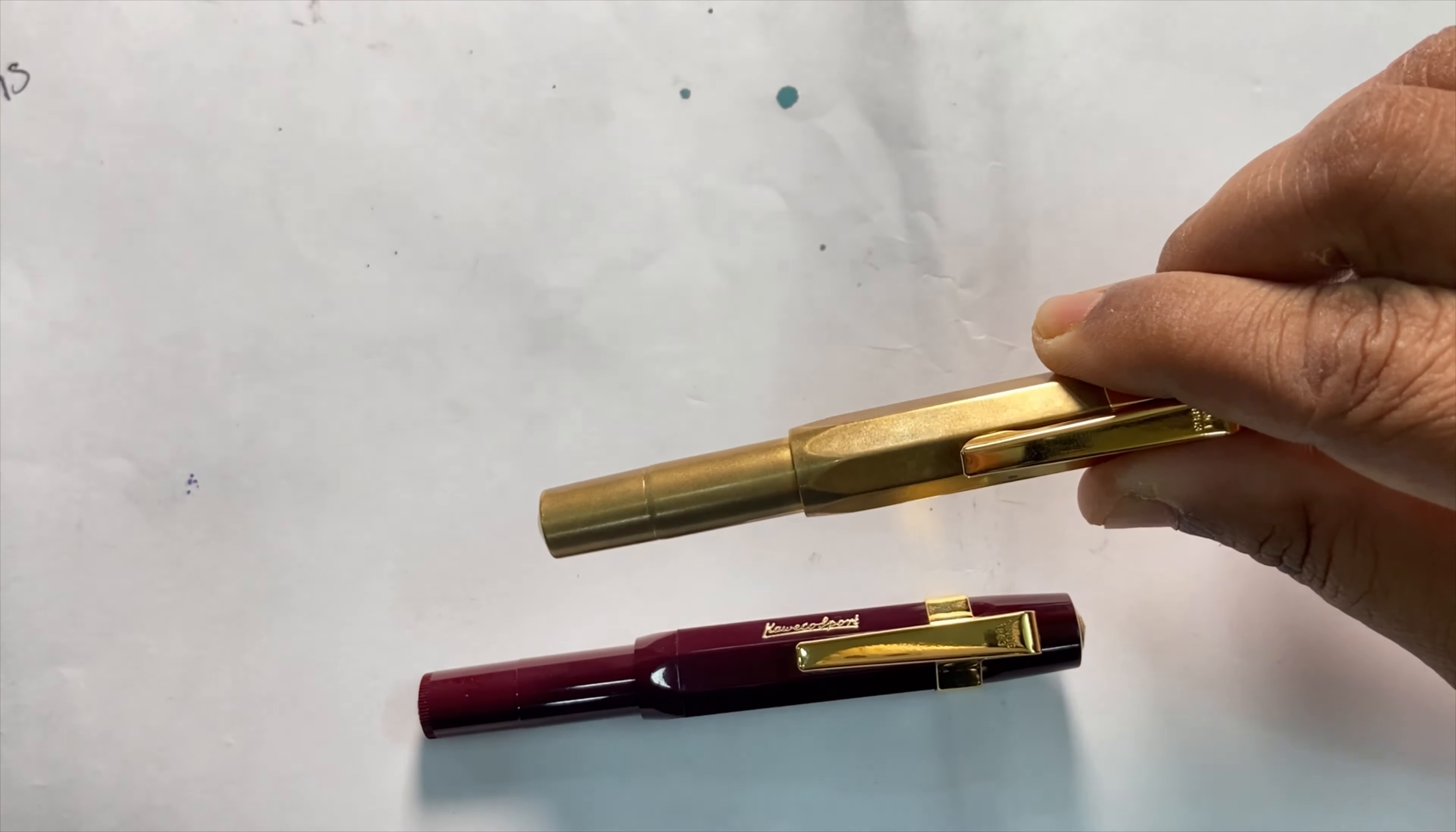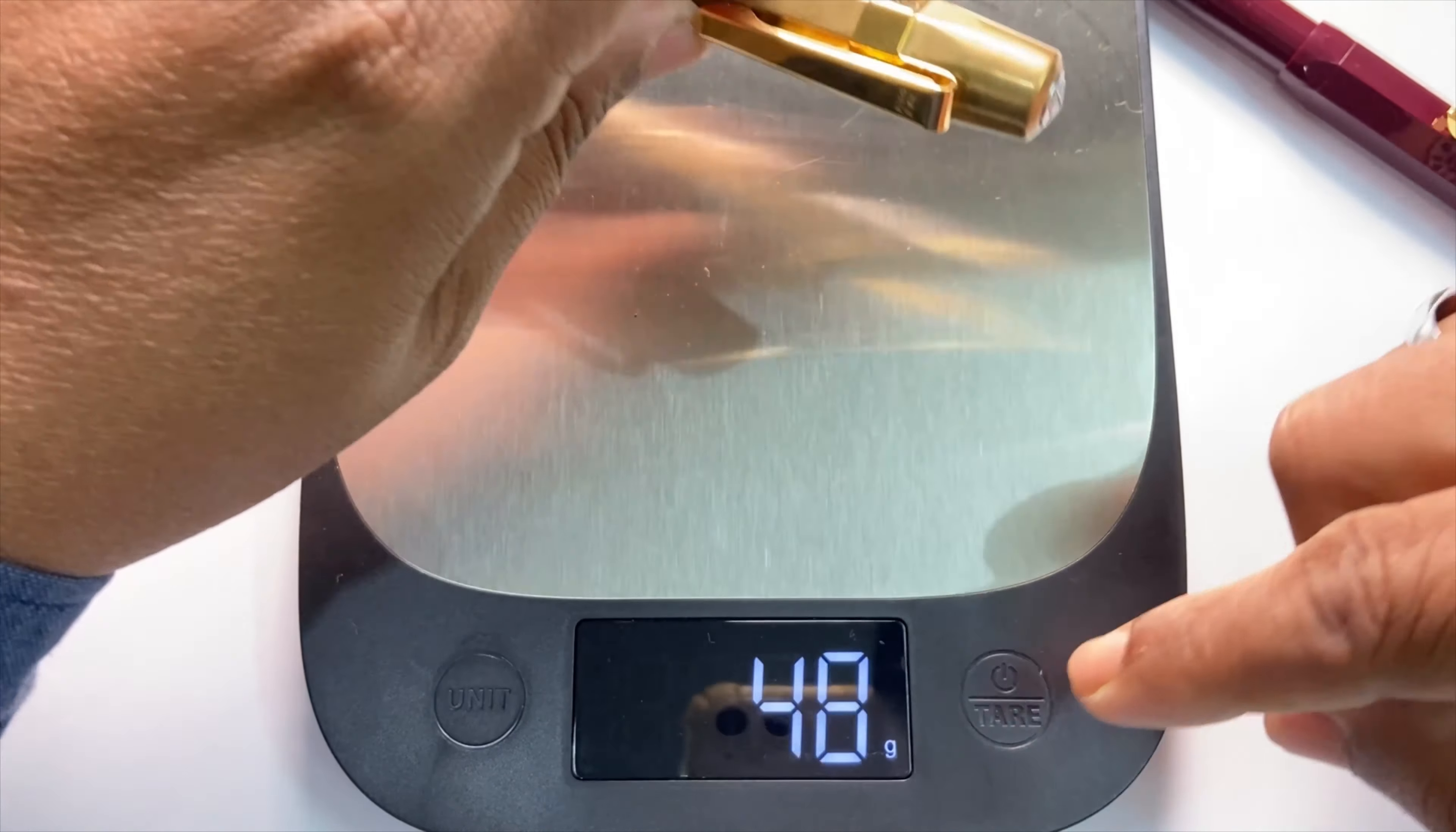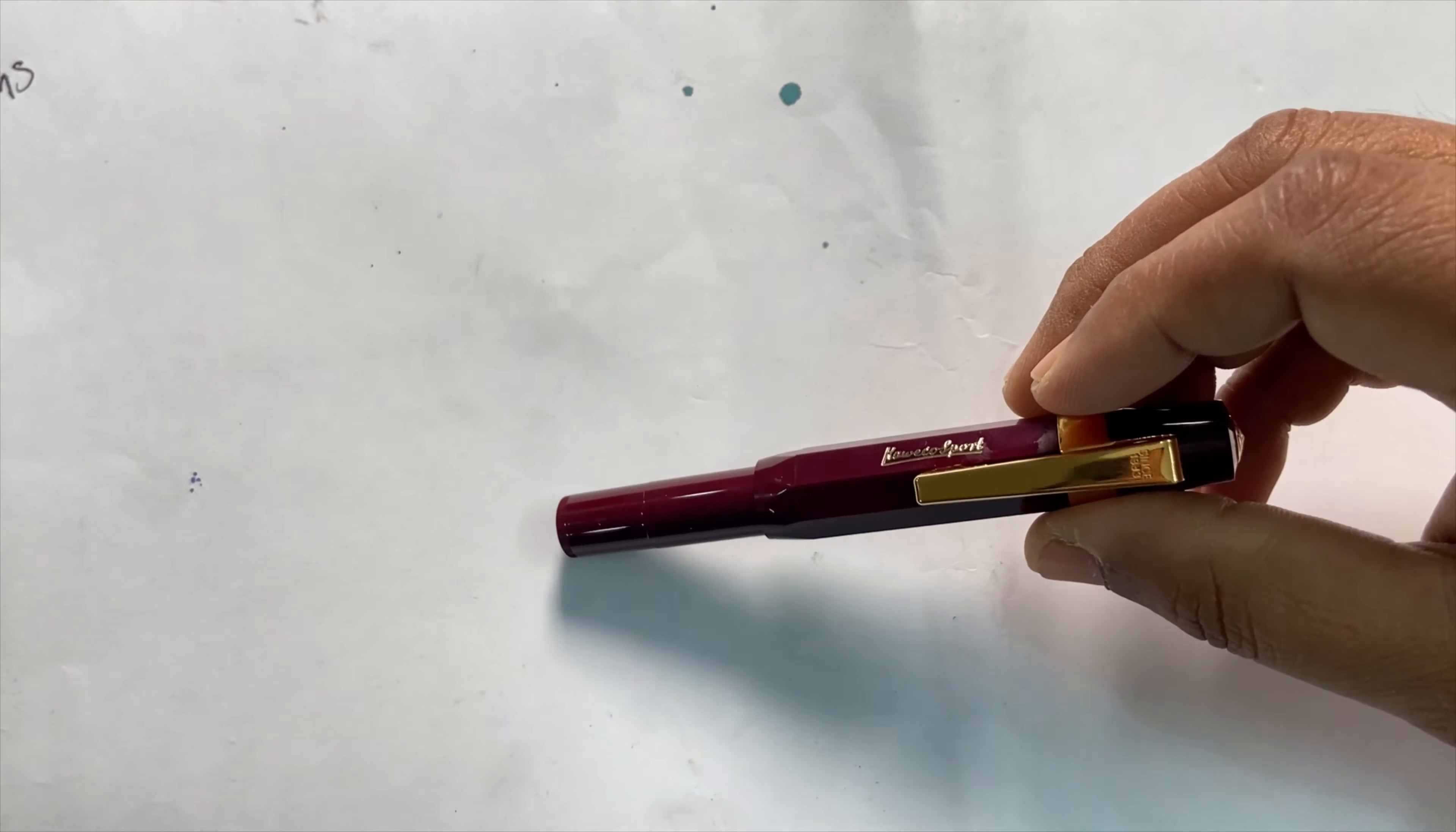Let me take a weighing sample in terms of a comparison before I go into the pen as such. Well, the brass version weighs 49 grams, whereas the plastic version weighs a comfortable 13 grams. So clearly, for those who feel that the solid metal versions of Kaweco Sport are a bit heavy, they usually opt for the lighter plastic versions.